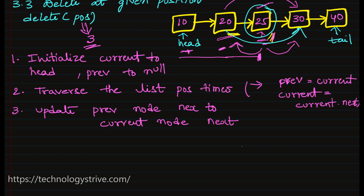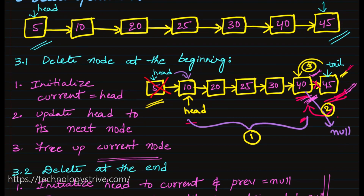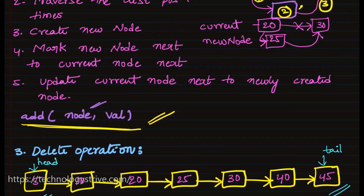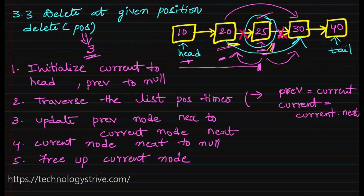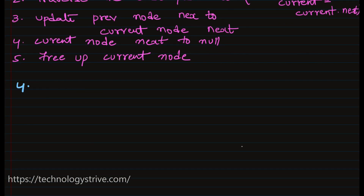After updating previous.next to current.next, we break the links from current node and set current.next to null. This is how we delete at a random position. These are the three different ways we can perform the delete operation. The fourth operation we want to discuss is search.